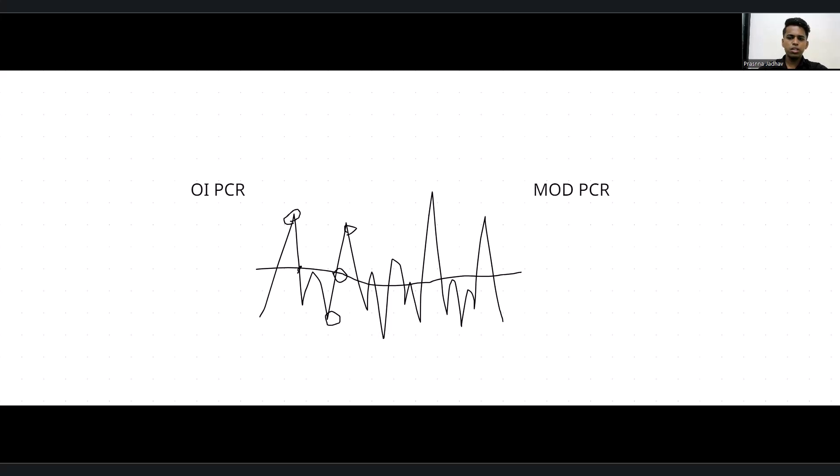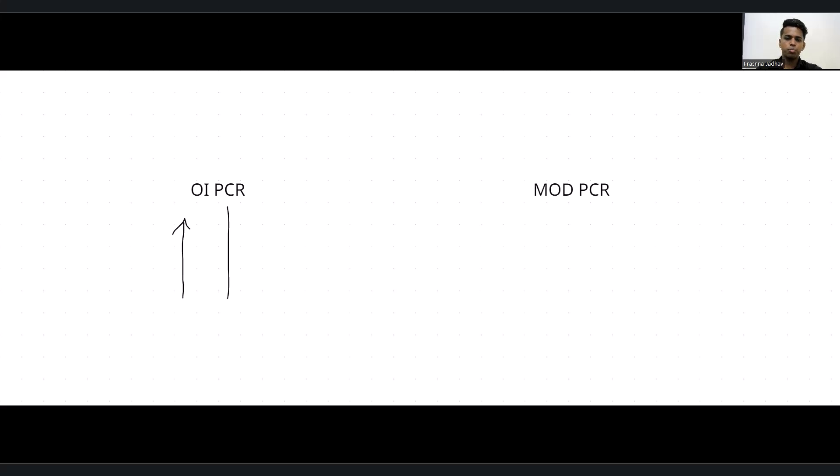The second characteristic: if you are aware about the OI PCR, you can understand the modified PCR as well. OI PCR is positively proportionate with the future price — whenever OI PCR is rising, that would be a bullish confirmation, a possibility of bullish momentum. If PCR is falling, there will be a bearish confirmation. So if OI PCR starts rising, that is a bullish confirmation.